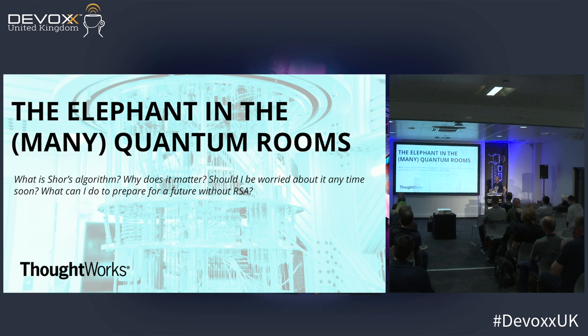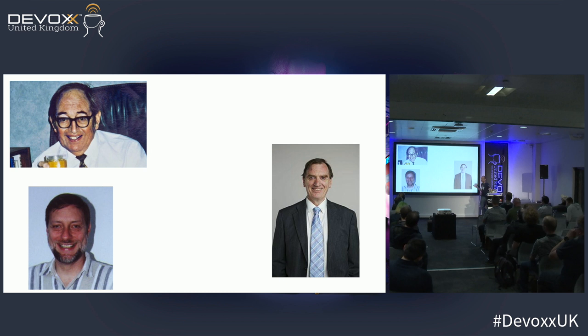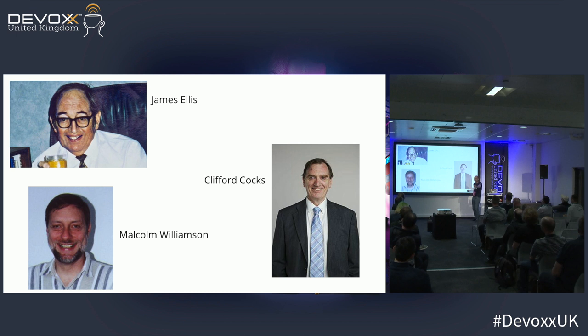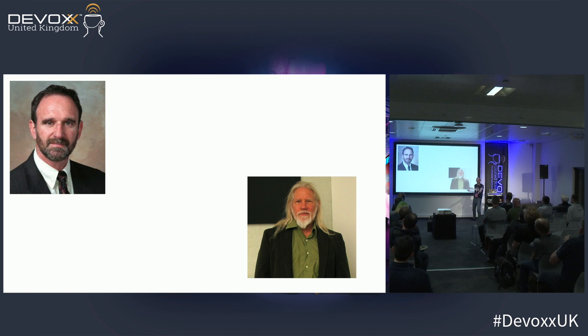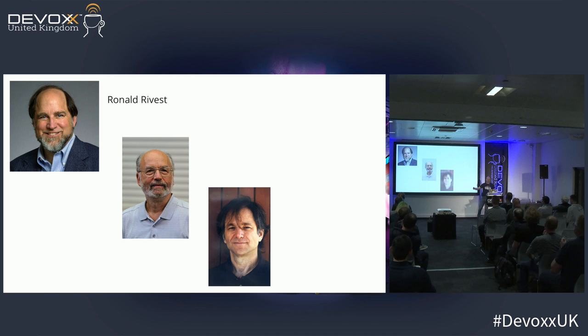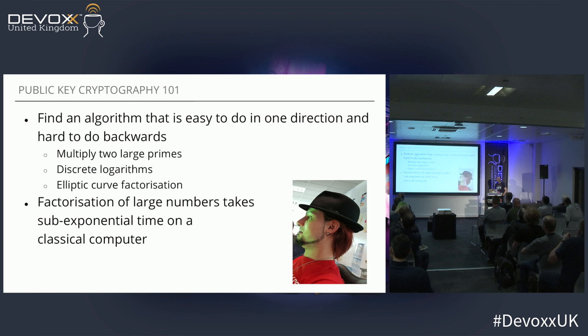Specifically in quantum computers, I'm going to talk about the elephant in the many quantum rooms. These three gentlemen are Rivest, Shamir, and Adleman. And these two are Diffie and Hellman. Why are we talking about them? Because we're going to talk about cryptography.